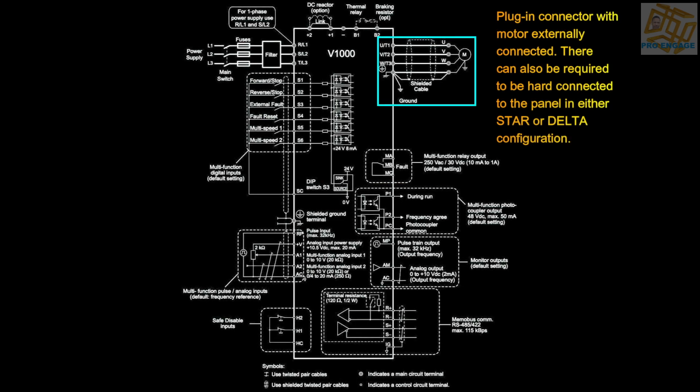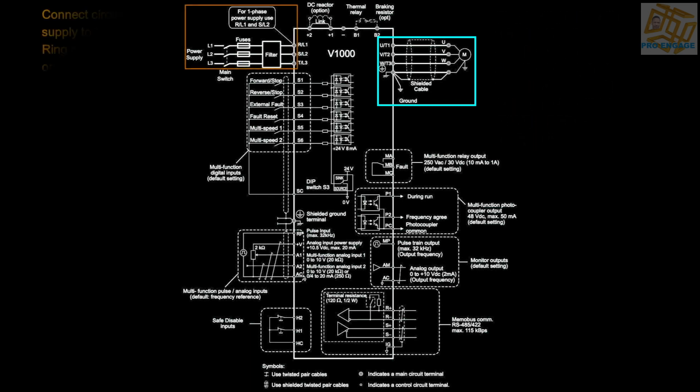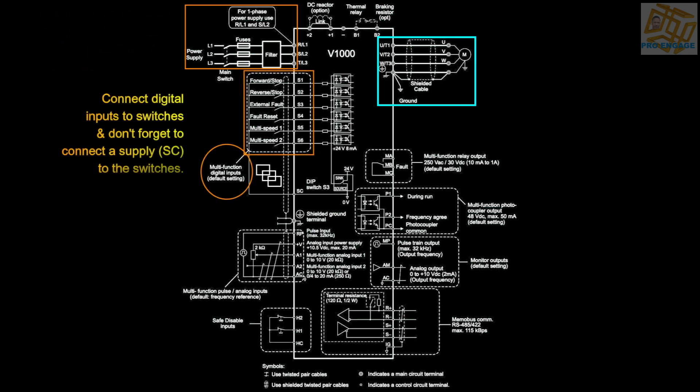The first thing is going to be the connection to the motor. We will have a plug-in connector and the motor can be hard connected onto the panel in either star or delta. Furthermore, we want to put a supply onto the VSD itself. This will be done on the front part of the panel.